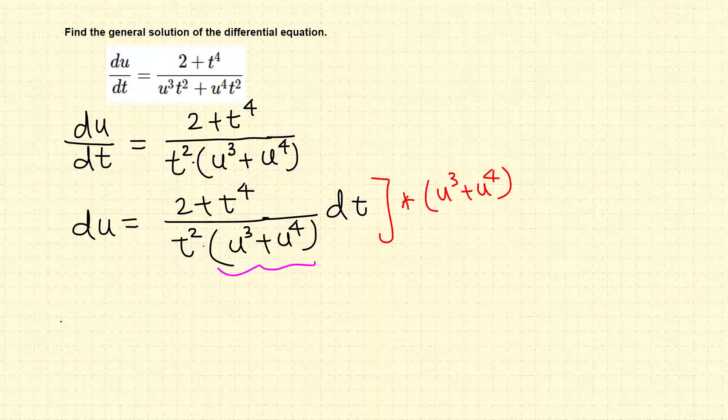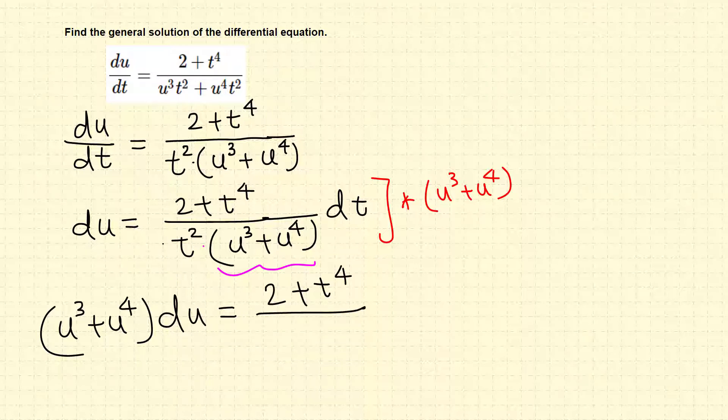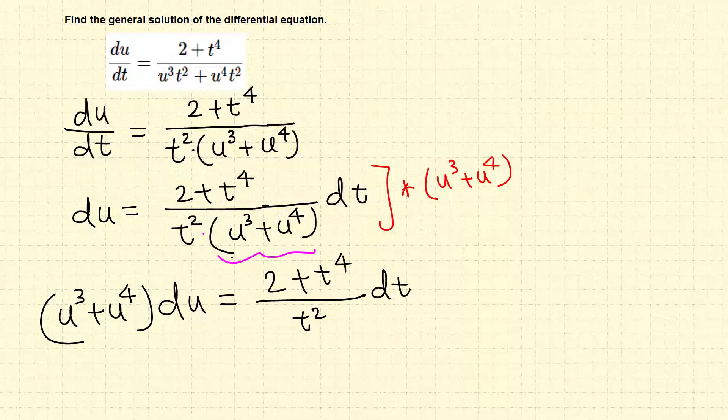So that this one cancels in the right hand side and this one times du in the left side. So we have u^3 plus u to the fourth du in the left side. In the right side 2 plus t^4 all over t squared dt. This way we separated the variables: function of u and du in the left, function of t and dt in the right side.